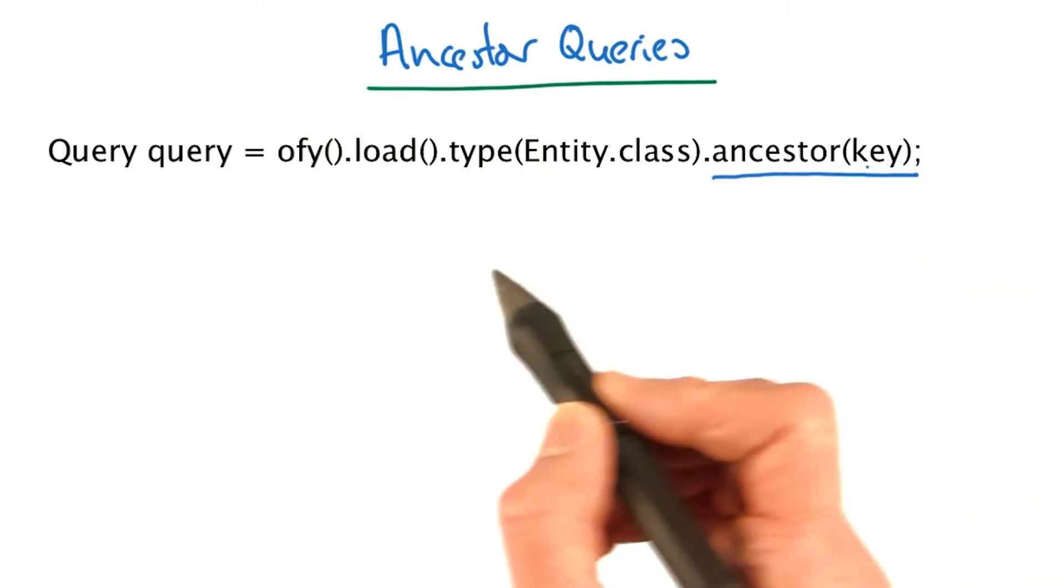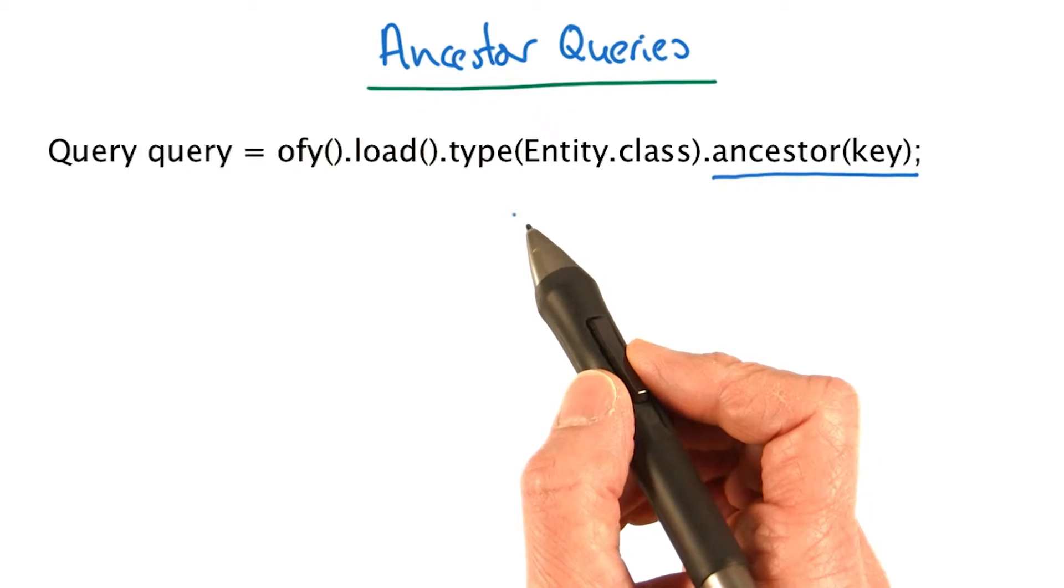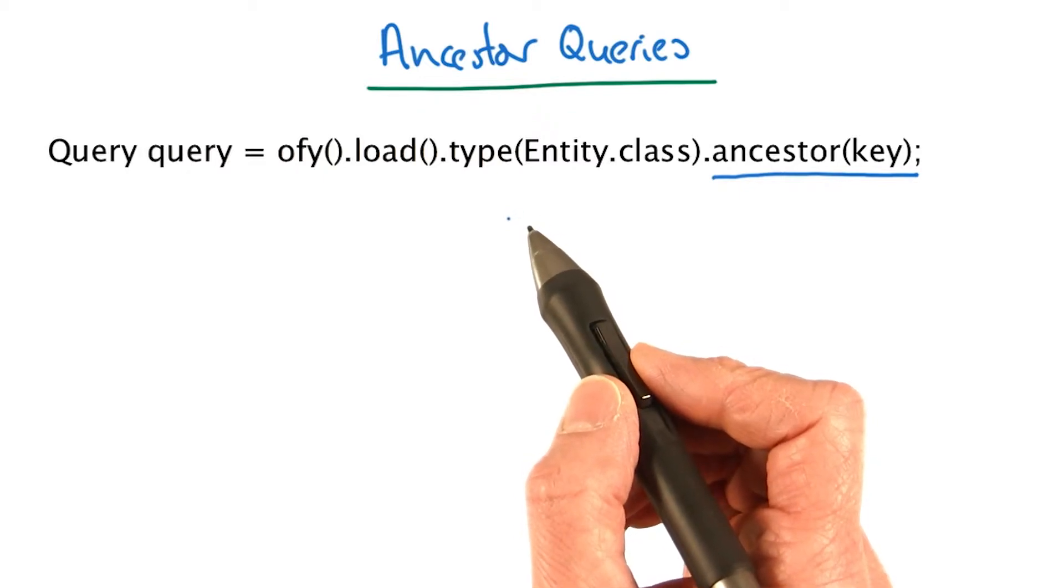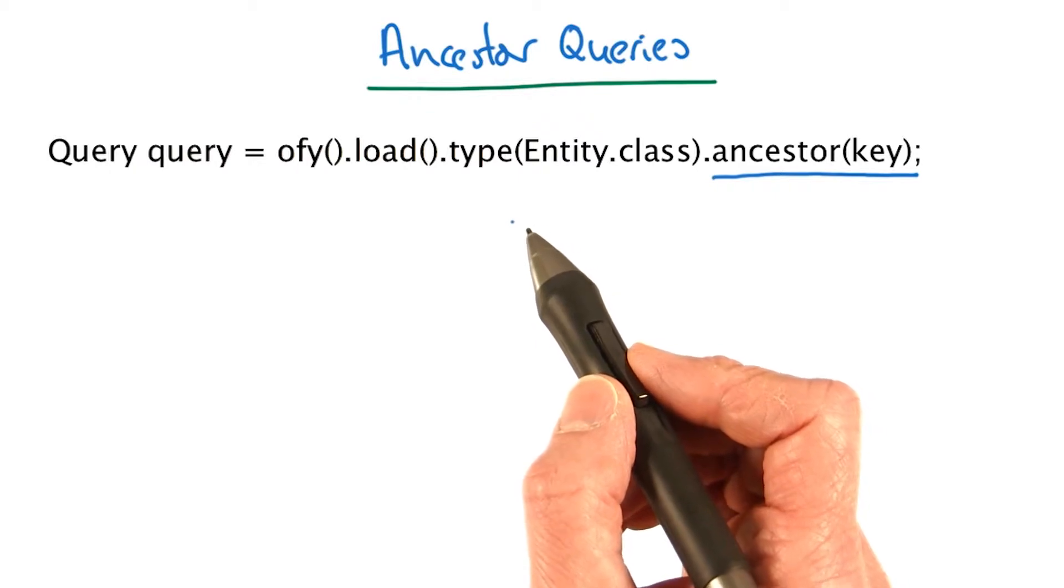This kind of query is called an ancestor query, but you could also think of it as a descendant query. That's because it gets all the descendants of a particular entity. So for conferences, for example, you can get all the conferences that were created by a certain user.